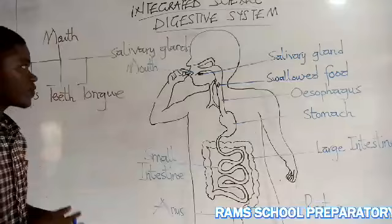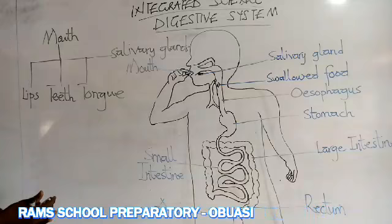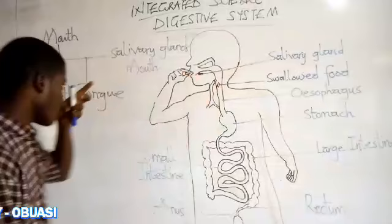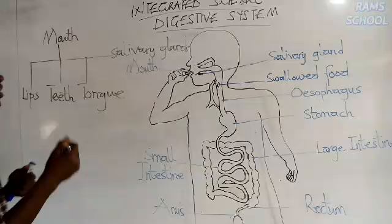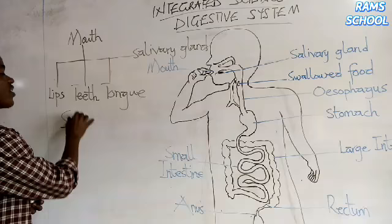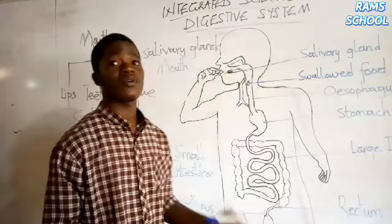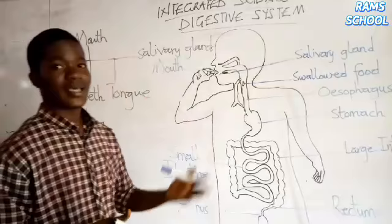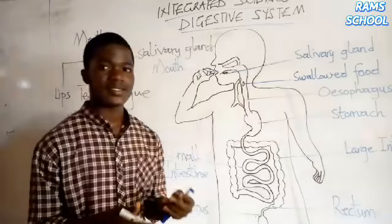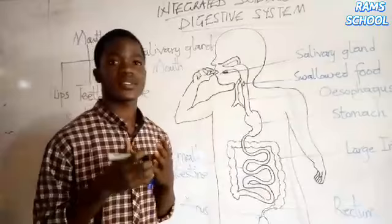Before digestion begins, the food is masticated in the mouth and then mixed with saliva. The saliva is produced from the salivary glands. The saliva softens food, which makes it easy for swallowing. The saliva also breaks down starch or carbohydrates into simple sugar. So starch digestion begins at the mouth.